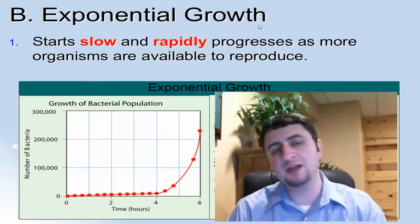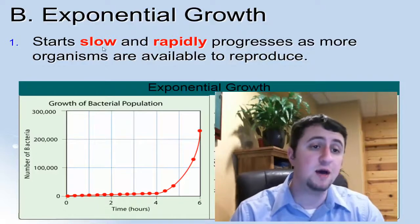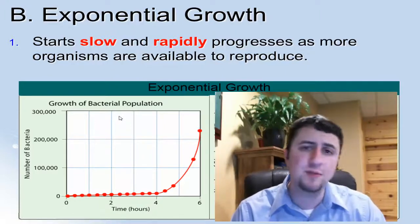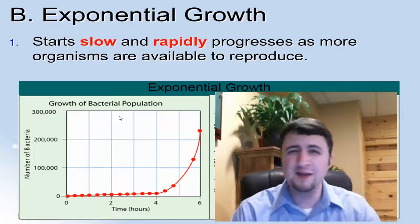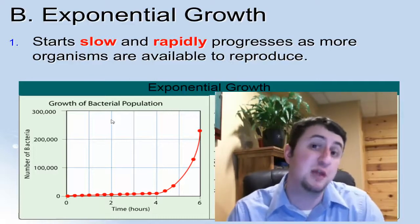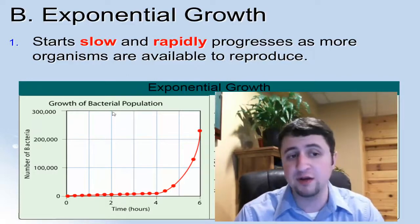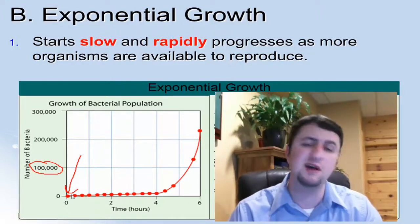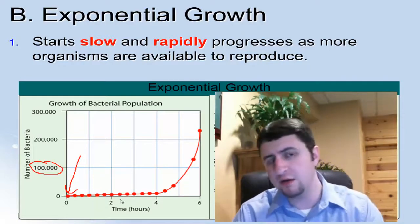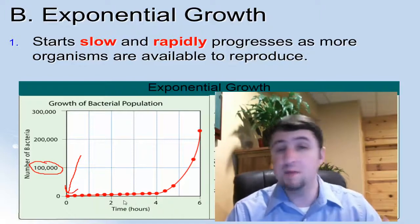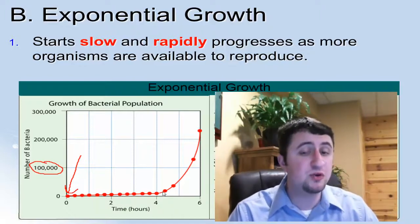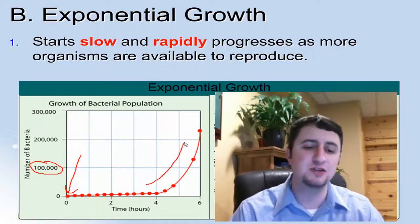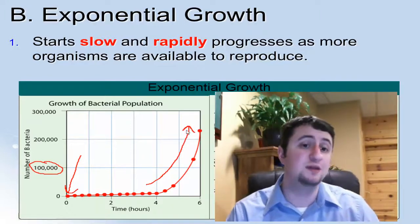The next concept is exponential growth. This occurs when a population number sort of explodes. Generally, populations start to grow slowly because there aren't that many organisms available to reproduce. For example, if we look at bacteria, early on there may only be around 1,000 individuals. But given some time, those bacteria reproduce, and as more become available, more are capable of reproducing — thus the population explodes. That's currently what's going on with human beings right now.